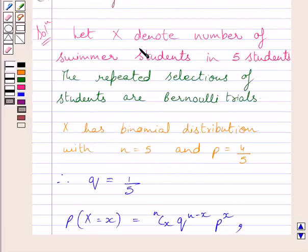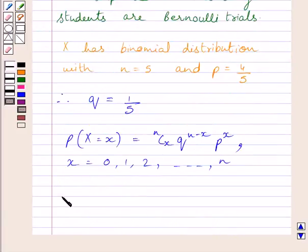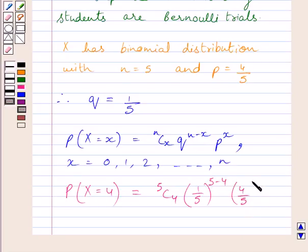X represents the number of swimmer students in 5 students. The probability of 4 swimmer students in 5 students is represented by P(X = 4), which equals 5C4. We know N equals 5, X equals 4, Q is 1 upon 5, N minus X equals 5 minus 4, that is 1, and P is 4 upon 5. Here we substitute the value of X, that is 4.